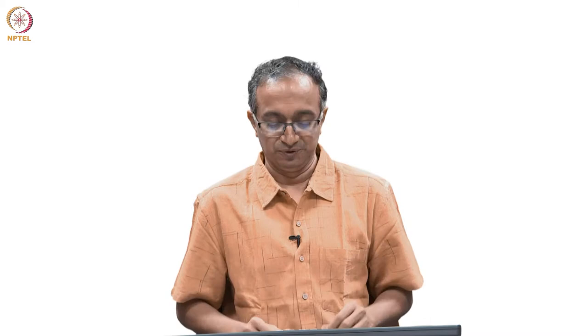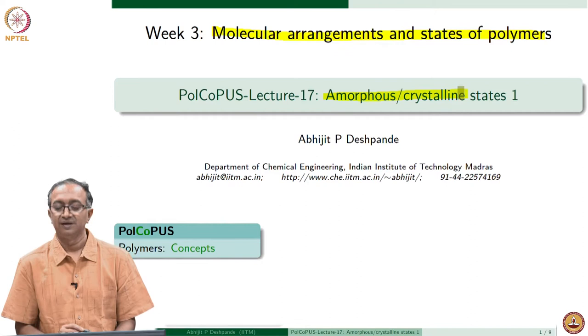I will again remind you that those macromolecular conformations and flexibility will still come into our discussions, because how these solid states are formed depends pretty much on how we process and fabricate the materials. During fabrication, segmental mobility or macromolecular conformations are possible. For example, how fast or slow I cool the material will determine how much flexibility was there and in the end what arrangement I get. So, we will look at molecular arrangement and different states of polymers — specifically amorphous and crystalline states.